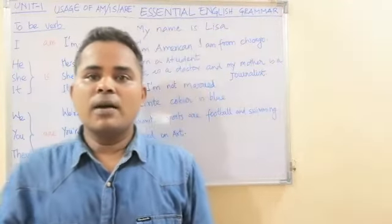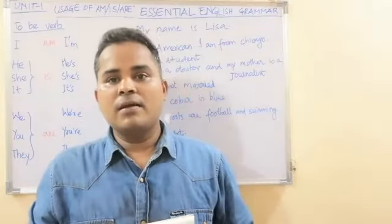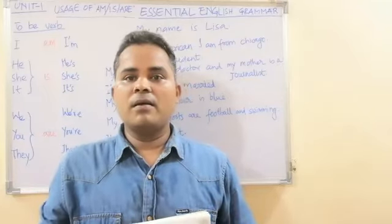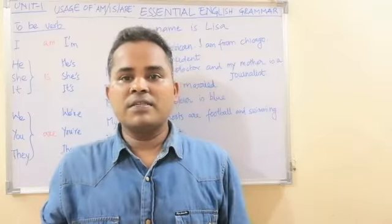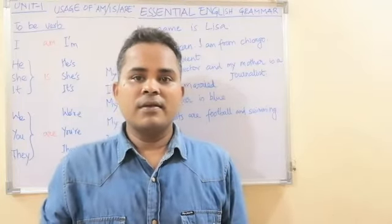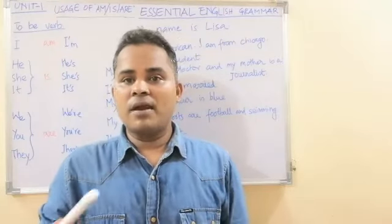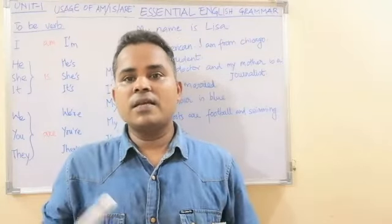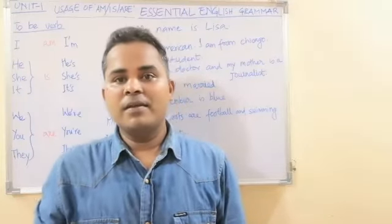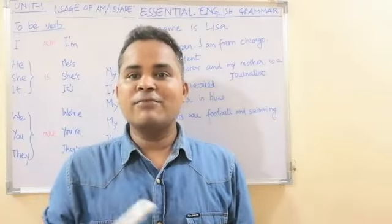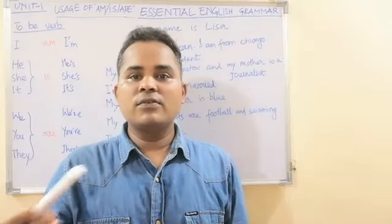I am going to introduce myself. My name is Ahmed Hussain. I am Indian. I am from Bihar. I am an interpreter. My father is a businessman and my mother is a housewife. I am 34 years old. I am married. My favorite color is blue. My favorite sports are cricket and volleyball. I am interested in learning languages. So this was my introduction. Similarly, you can introduce yourself.